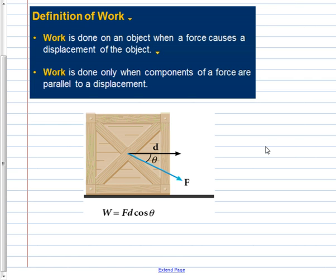Work in physics is different than when your parents made you go outside and work by mowing the lawn or pulling weeds in the flower bed or working at the cafeteria. Physics definition of work: work is done on an object when two things are going on — a force causes a displacement of the object.